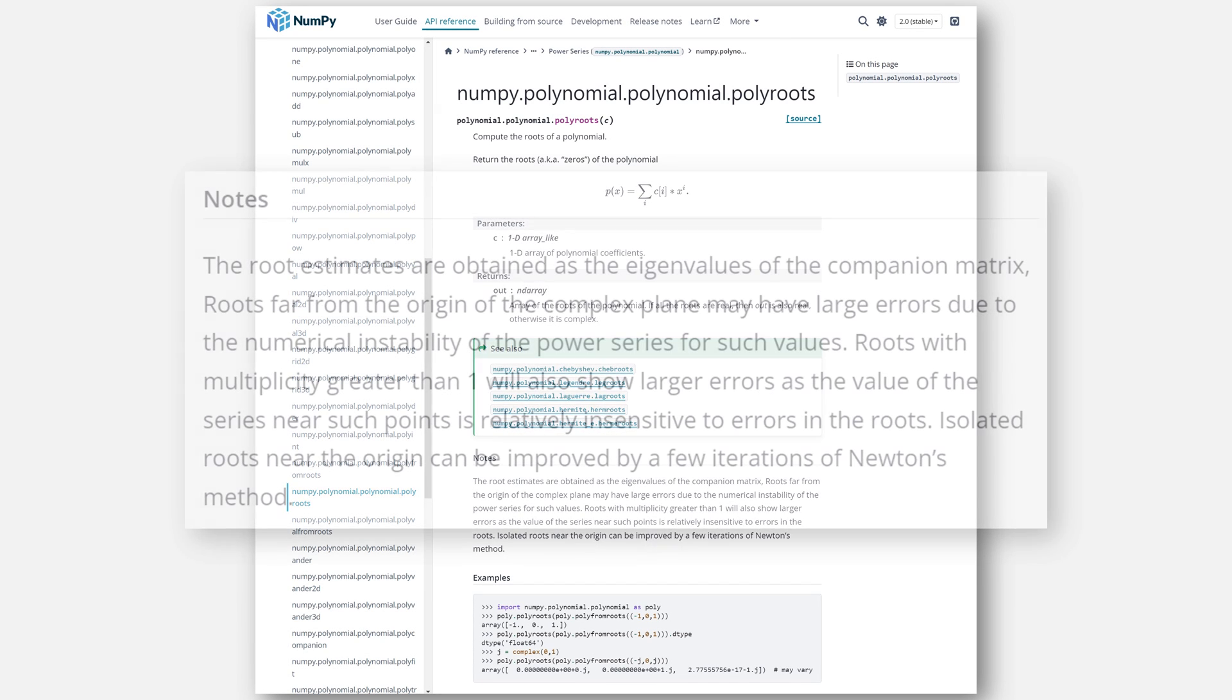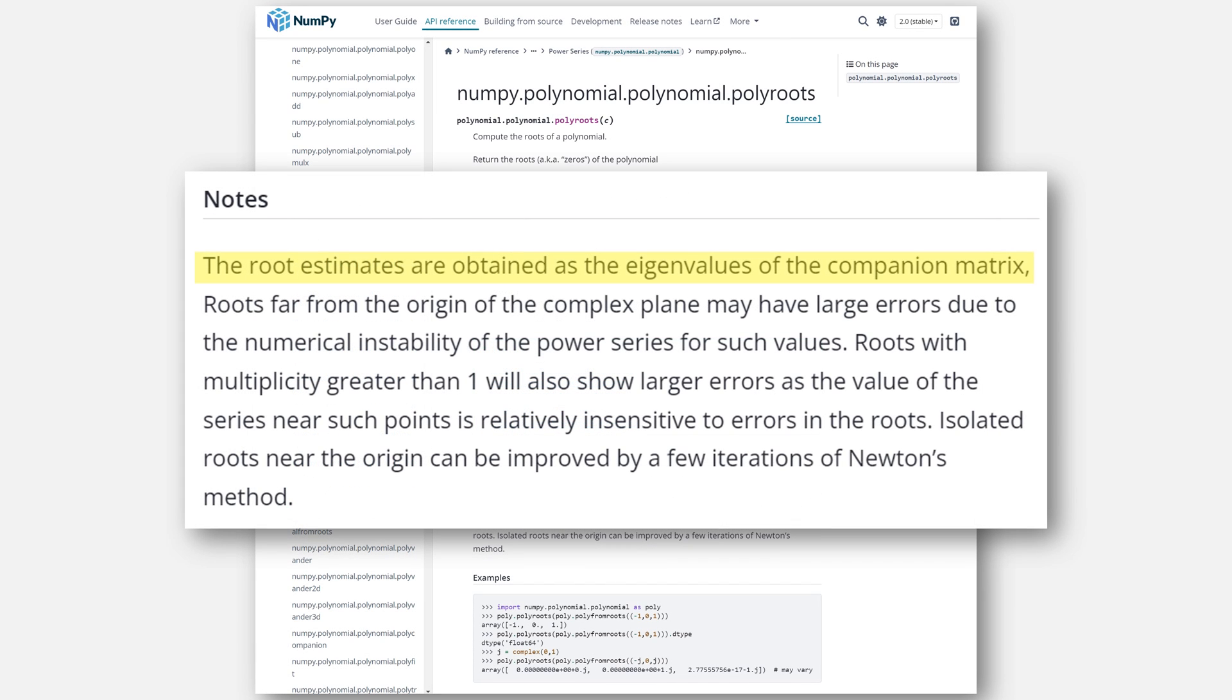When you look up the documentation for how NumPy solves roots, you'll find that it says the root estimates are obtained as the eigenvalues of the companion matrix. But what are those?